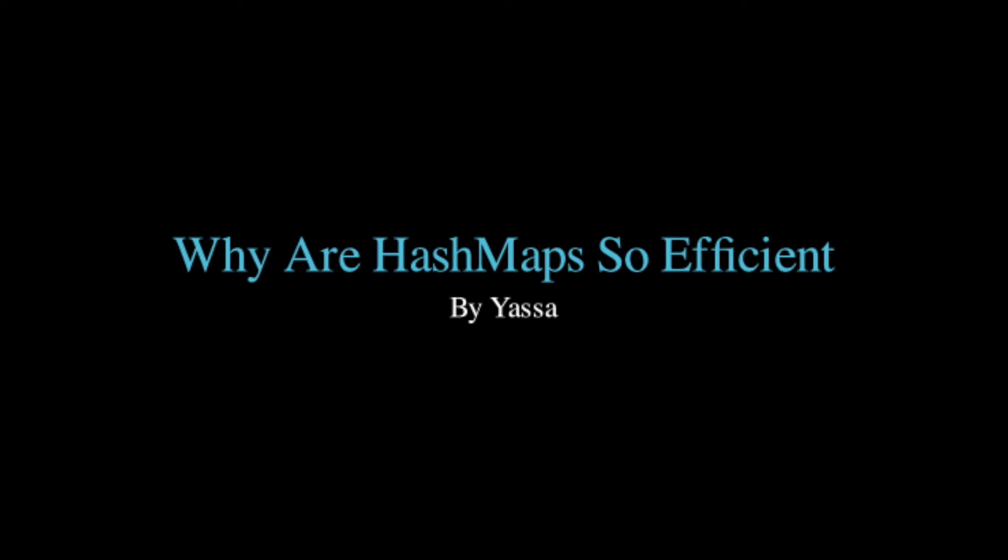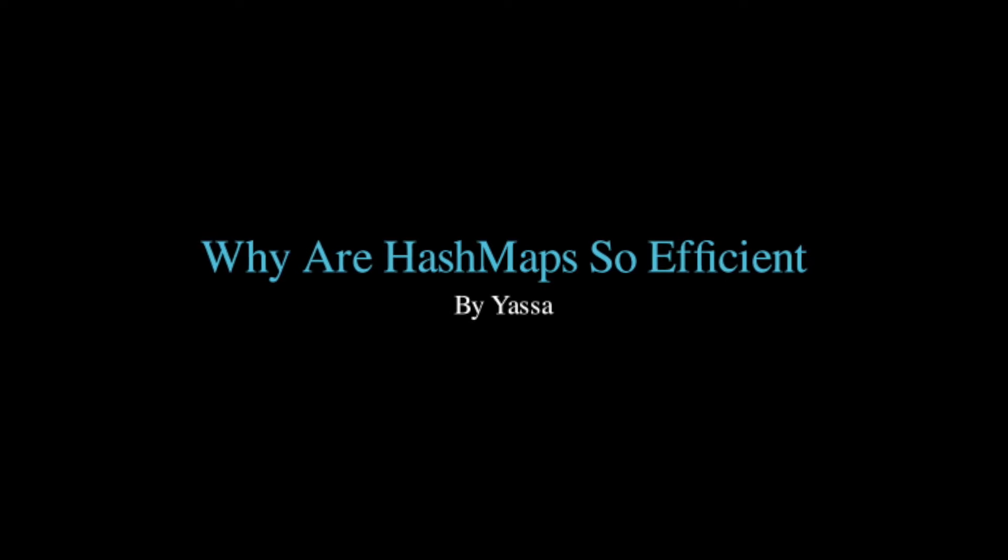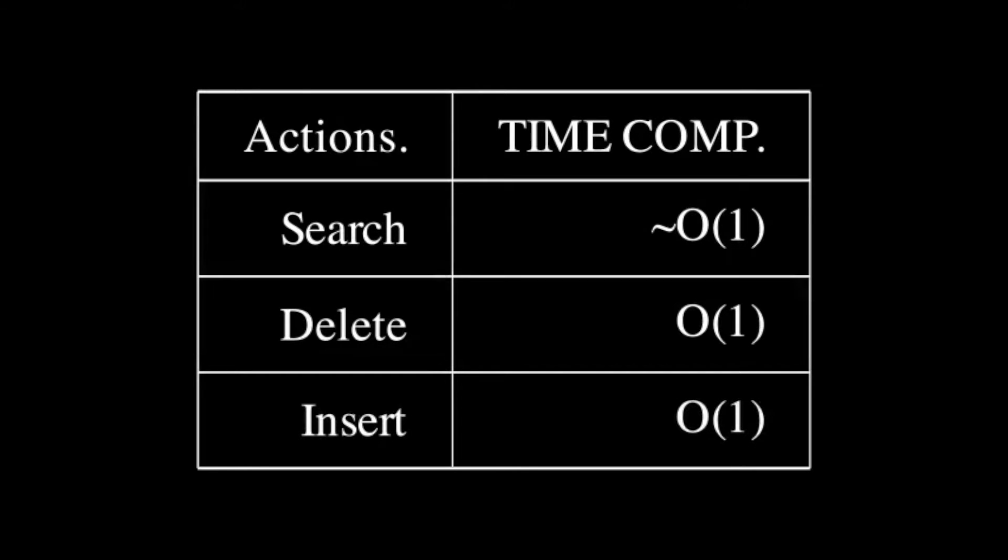When we implement algorithms inside of coding questions, we often realize that a hash map is one of the most efficient ways to get something done. But why are hash maps so efficient? With an average constant time with searching, deleting, and looking up, we as developers often forget why they're efficient and move on with our lives.